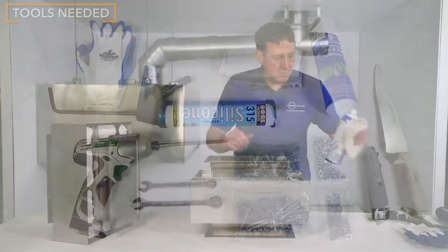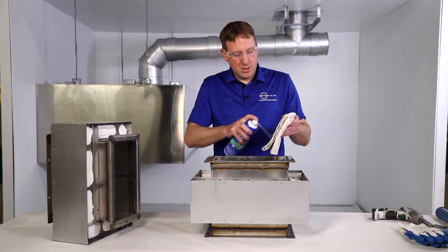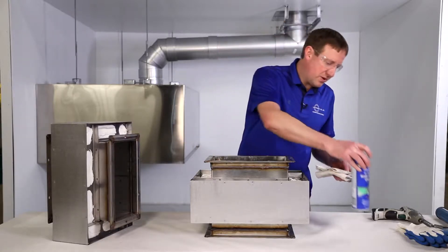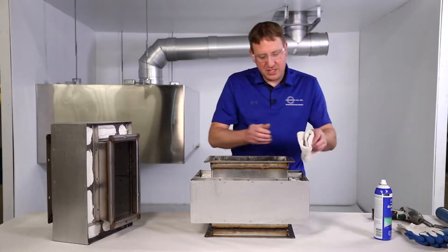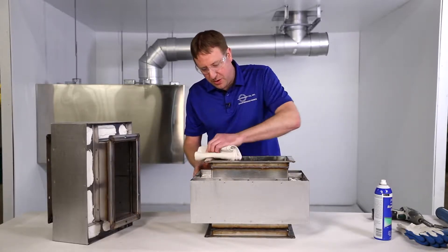First thing we're going to do, we recommend doing this with all of our products. We're going to clean all the flanges with Permatex parts cleaner. It's an acetone based cleaner. We recommend using an acetone parts cleaner on all of our products.